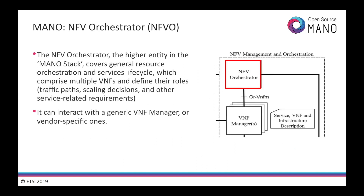The higher entity in the MANO stack is called the NFV orchestrator, which receives the operators' or OSS calls to its catalog of network services and provides a complete lifecycle automation for those services. This element fulfills the NFV vision of abstracting operators from the complexities of operating the underlying infrastructure platforms available at the network.